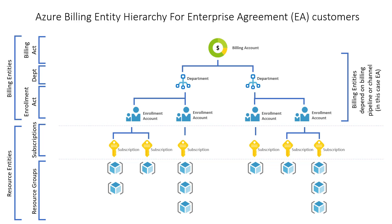Under the billing account, using the EA Enterprise portal, you can set up multiple departments. Each department will appear as a separate section in your invoice and can be grouped and filtered separately in Azure Cost Management. Each department can have multiple enrollment accounts, which determines the subscription owners and provides another level of granularity by which costs can be grouped and filtered separately in Azure Cost Management. The enrollment account is the lowest EA billing entity, underneath which are the resource entities — first subscriptions, and under those, resource groups.